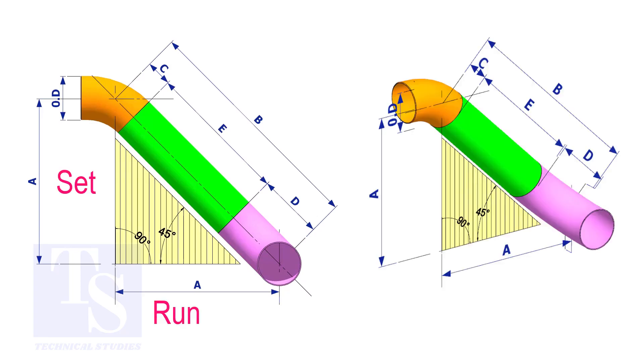In an offset, if the including angle is 45 degrees, the set and the run shall be the same. If the value of the set and the run are equal, the value of the travel is set or the run multiplied by 1.414.